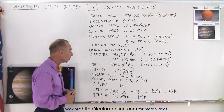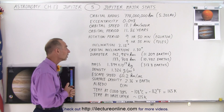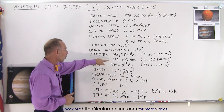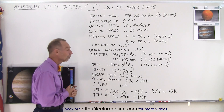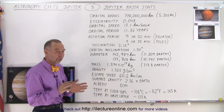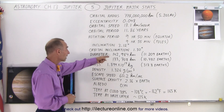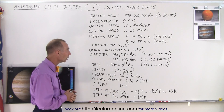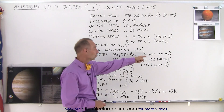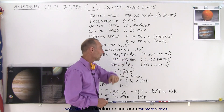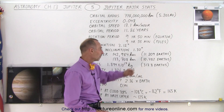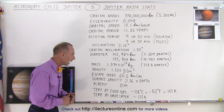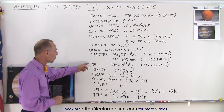The diameter of the planet at the equator is 143,000 kilometers, and from pole to pole it's only 133,000 kilometers. So it's almost 7% different between the diameter at the equator versus at the pole. That's about 11.2 Earth diameters at the equator and about 10.5 Earth diameters at the poles.